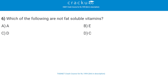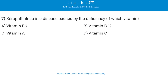Next, which of the following are not fat-soluble vitamins? The correct answer is vitamin C, that is option D. Next, xerophthalmia is a disease caused by the deficiency of which vitamin? The correct answer is vitamin A. Xerophthalmia is caused by deficiency of vitamin A. Scurvy is caused by a deficiency of vitamin C.